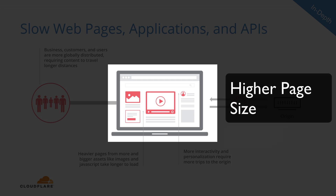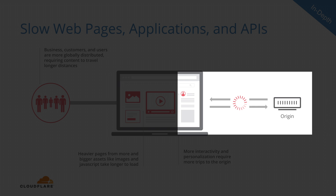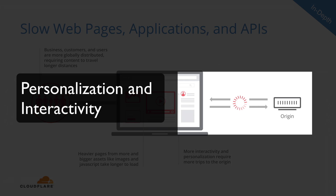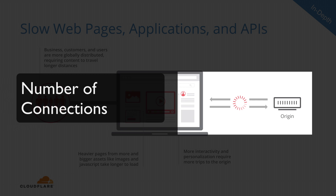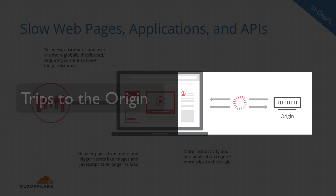The higher page size increases the amount of data that must travel over the networks. And as dynamic content to support personalization and interactivity grows, the number of connections or trips to the origin also increase. For example, an interaction which needs to fetch profile information or to process inputs from the user around purchase preferences raises the amount of personalization and interactivity, and therefore trips to the origin and connections.